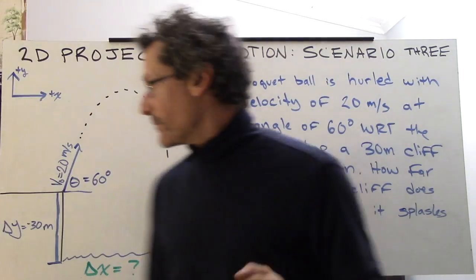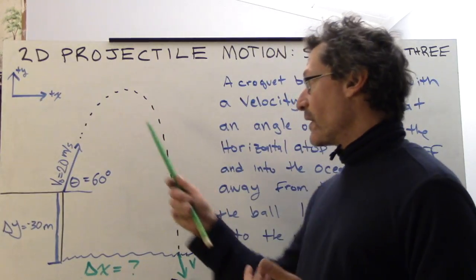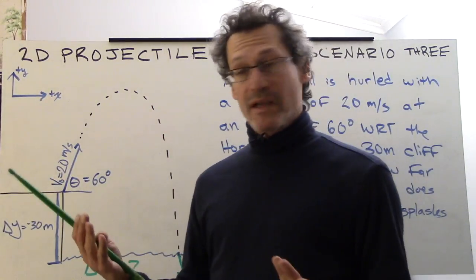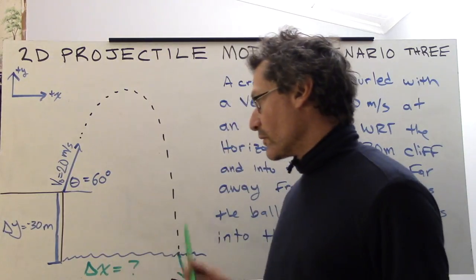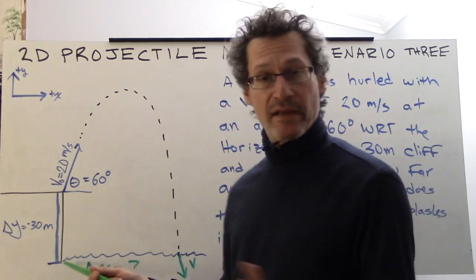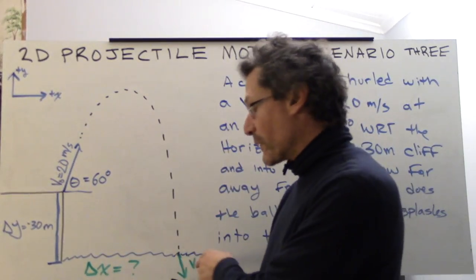The cliff is 30 meters high. The ball is going to go up in this parabola type shape and end up in the water below its launching point. So the delta y is negative 30 meters from the top to the bottom. We want to find delta x.